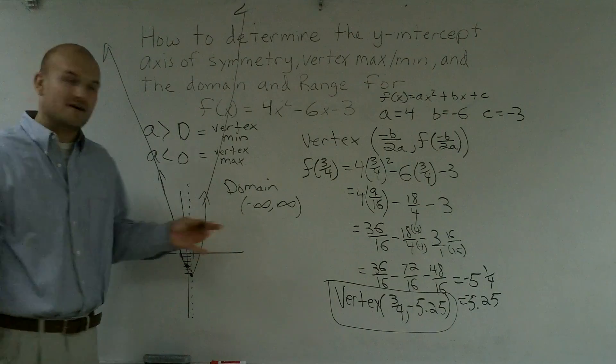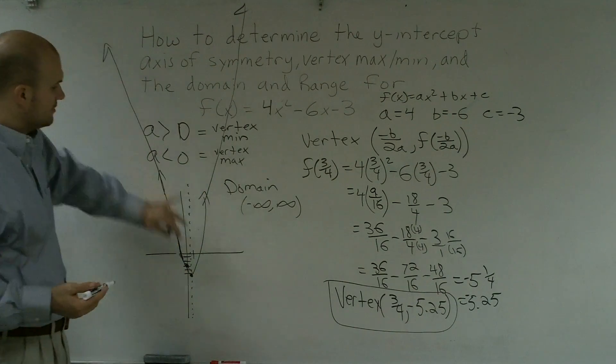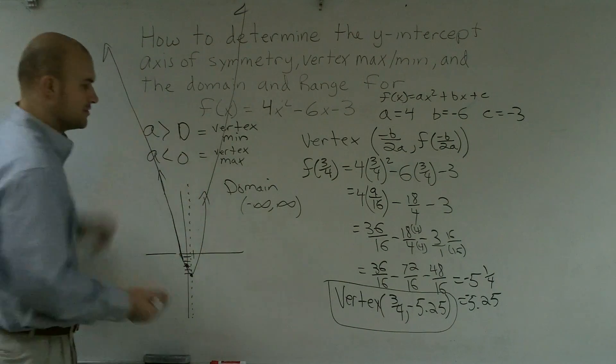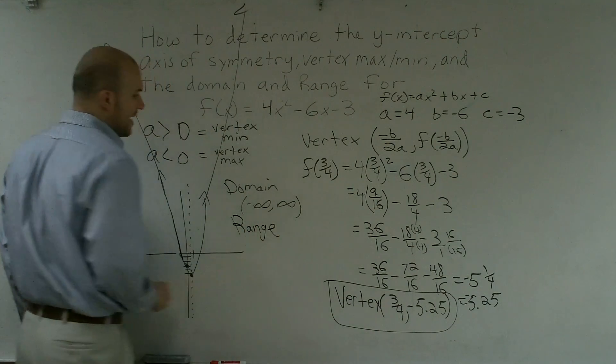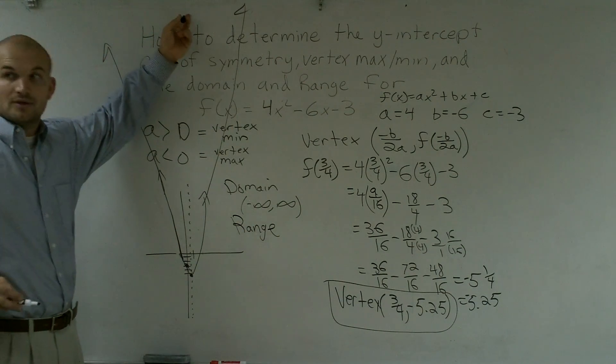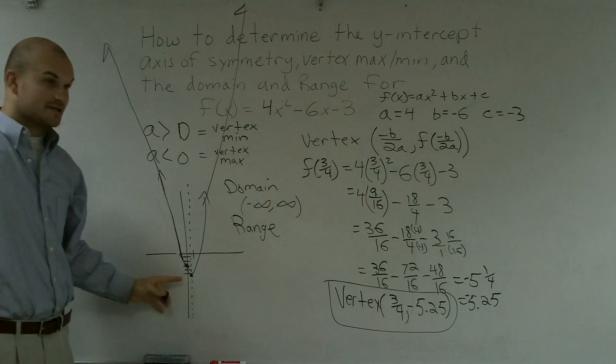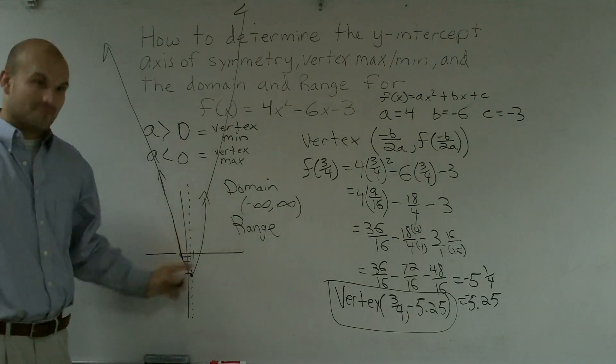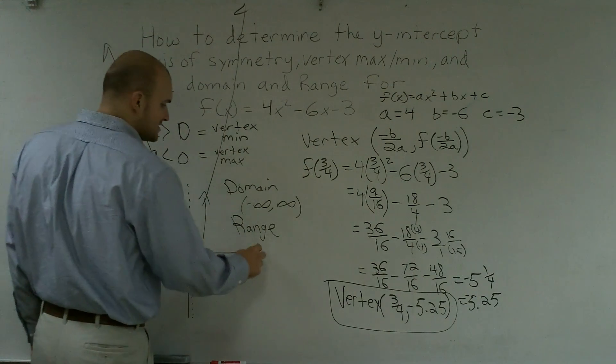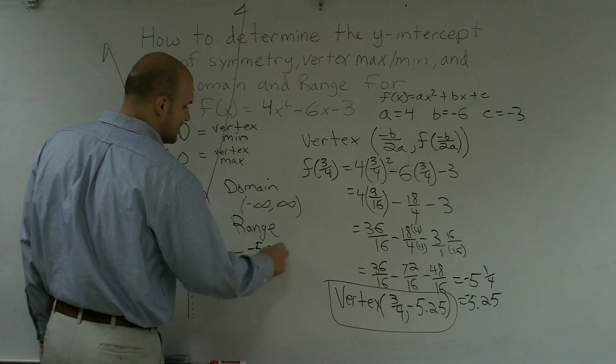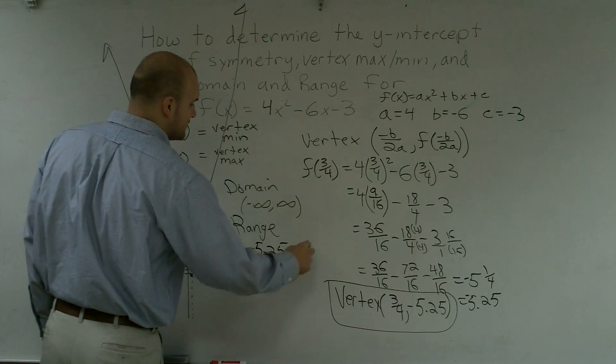Domain is the range of all the x values that makes your graph true. Then you have your range is all your y values. So obviously we know this goes up to infinity in the y value, but how far down does it go? -5.25. So the lowest point in your range is -5.25, and the highest point is positive infinity.